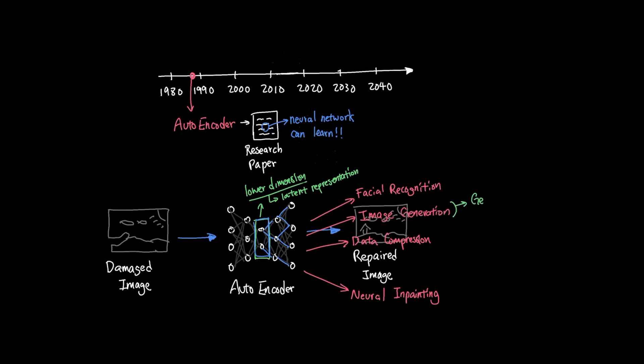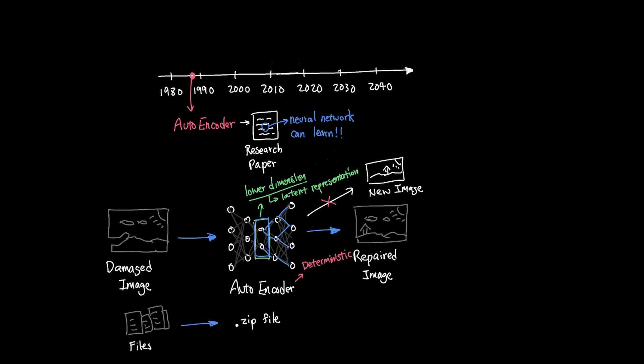One critical application was generative tasks, meaning generating new images that are original, in other words, novel data. However, the limitation of autoencoder model was that it wasn't capable of generating new images because it was deterministic. In other words, similar to how when you zip your files and unzip it, you're going to get the same file all the time. Autoencoders behave very similarly where the latent representation of the image didn't allow for unzipping in a way that was different each time.